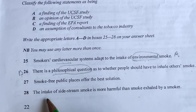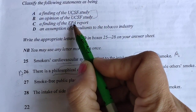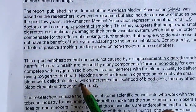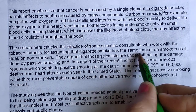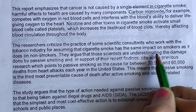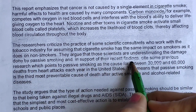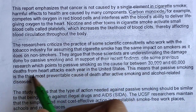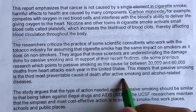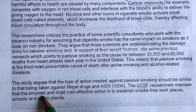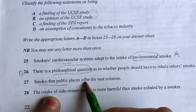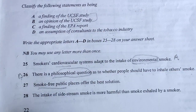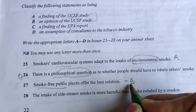The philosophical question about whether anyone should have to breathe someone else's cigarette smoke — this is an opinion, not a finding. So we go with B for that. 'Smoke-free places offer the best solution' — the last paragraph states: 'researchers maintain that the simplest and most cost-effective action is to establish smoke-free workplaces, schools and public places.' This is also an opinion, not a finding, so option B applies.